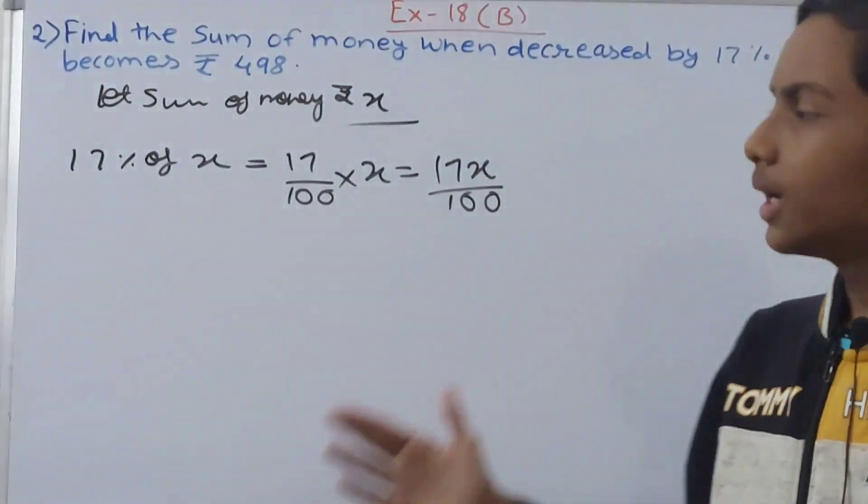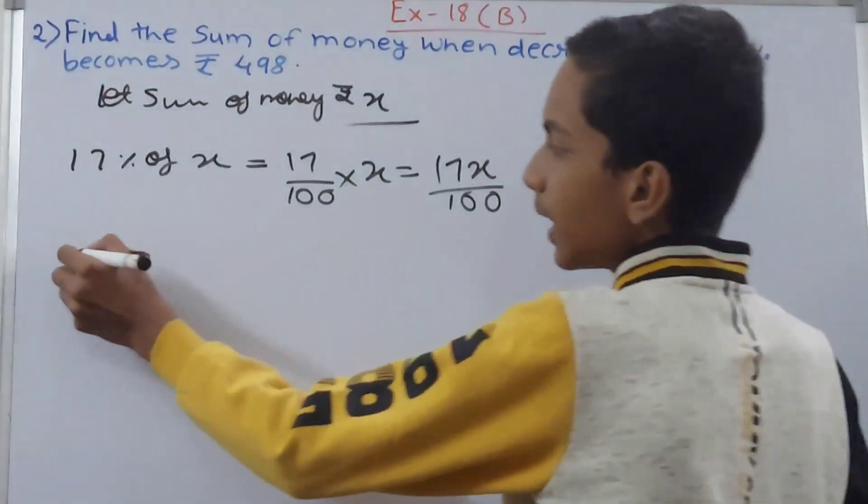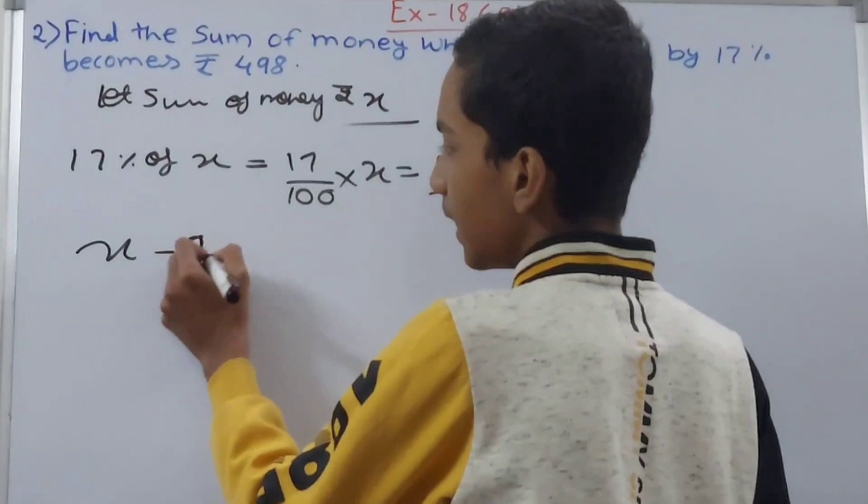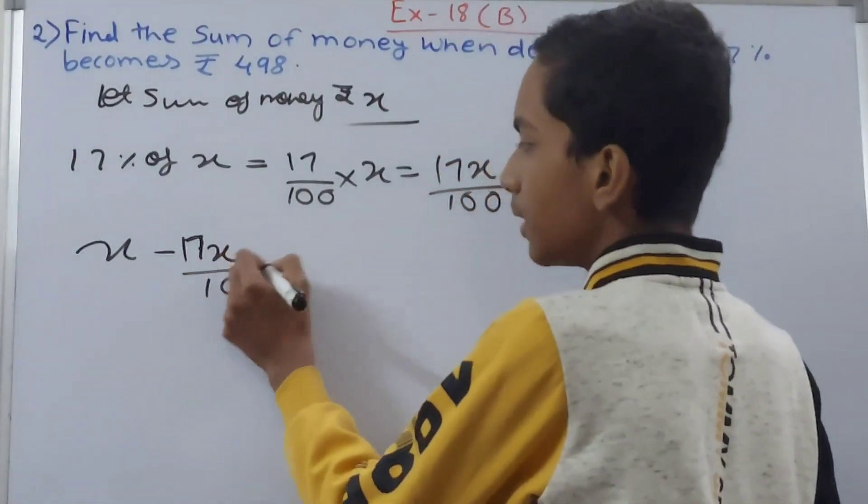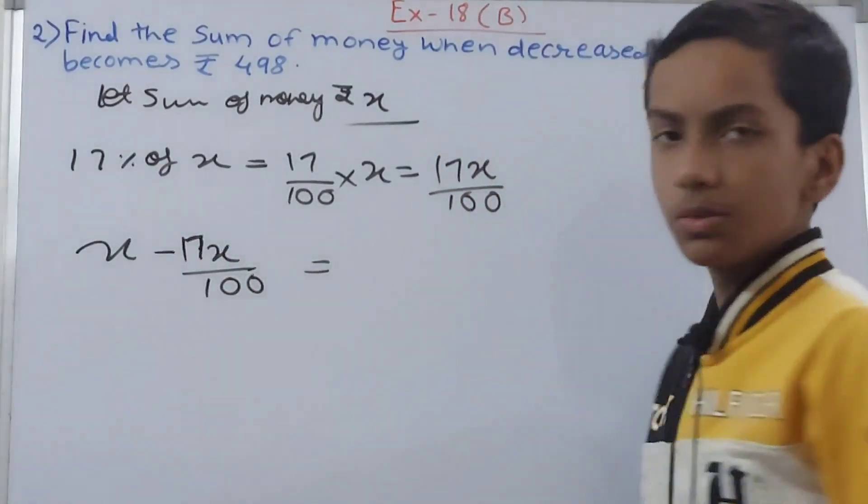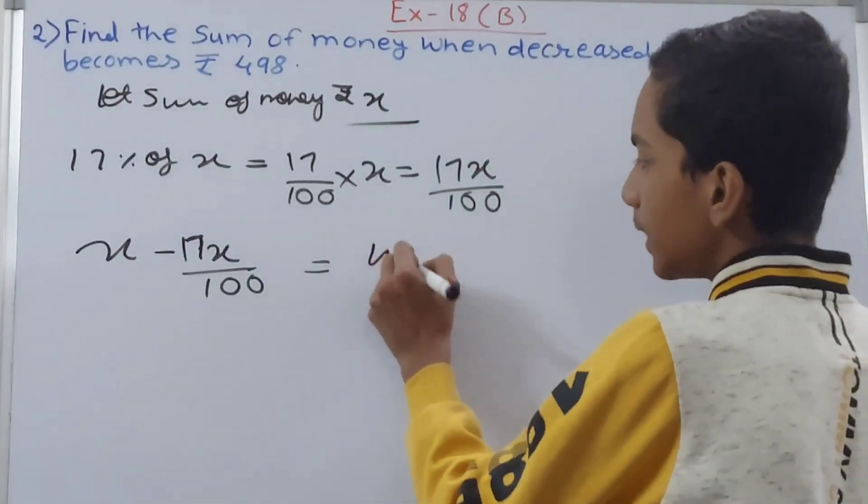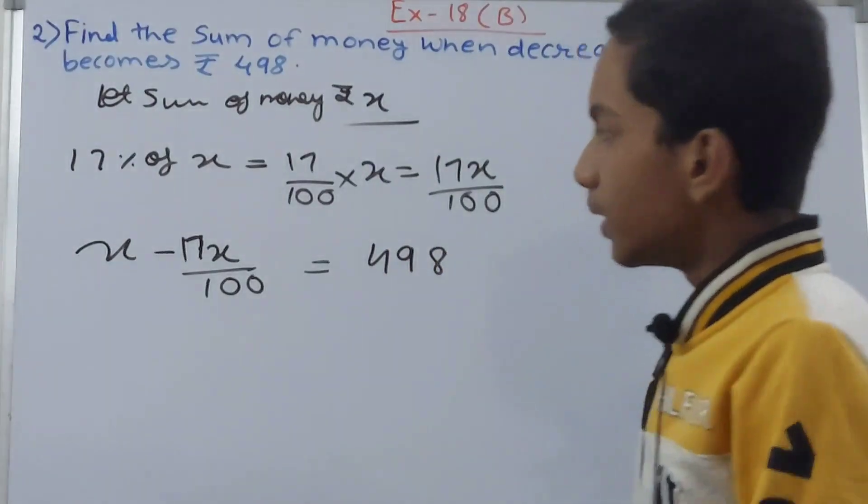This can be written as x minus 17x upon 100, and that gives us ₹498. Now this equation can be solved to find the value of x.